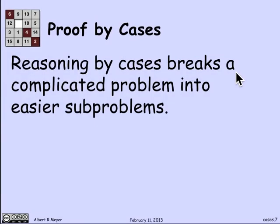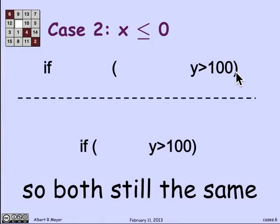So what I just figured out was that in both cases, these two expressions yield the same result, which means, and the only possible cases are that x is greater than 0 or x is less than or equal to 0. So in all cases, they're the same, and we're done. That's why it's safe to replace the upper complicated expression by the lower less complicated expression.